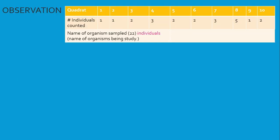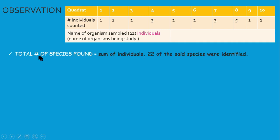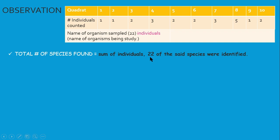Let's look at the calculations for what we did. We recorded this data in our table. We used 10 samples instead of 8 that it should have been. We recorded 22 organisms. The total number of species found in the area is the sum of organisms from all the throws, which amounts to 22.